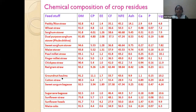The crop residues most commonly used include paddy straw, rice straw, wheat straw, sorghum stover, and dual-purpose sorghum stover. The dual-purpose sorghum stover has the advantage of providing both good-quality sorghum seed and stover. Sweet sorghum stover is also cultivated, used for ethanol production. Others include maize stover, pearl millet straw, finger millet straw, chickpea straw, red gram straw, and groundnut haulms, as well as black gram and green gram straws and sweet sorghum bagasse.